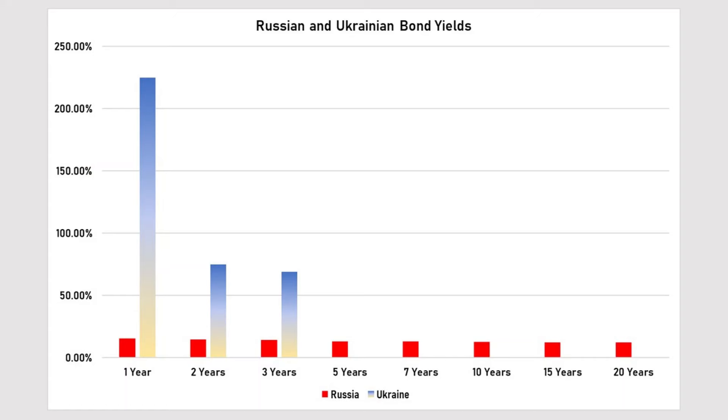So what are the bond markets saying about the conflict in Ukraine? What is interesting is that despite the large amount of media and financial reporting showing the dramatic, deleterious effects of Western sanctions on Russia, the bond market is showing a slightly different picture. What we have here is a beautifully colored graph of the Ukrainian and Russian bond rates. We're only able to get one, two, and three-year bond rates for Ukraine — perhaps I could get more information if I had access to a Bloomberg terminal.